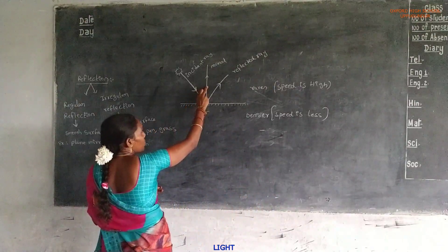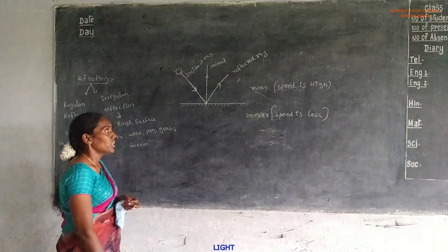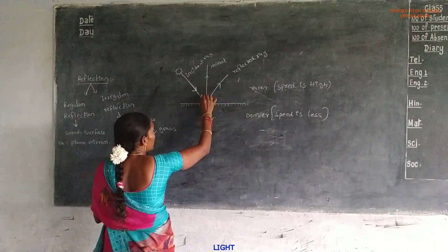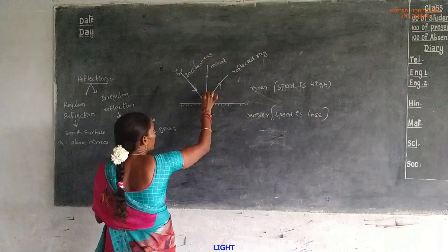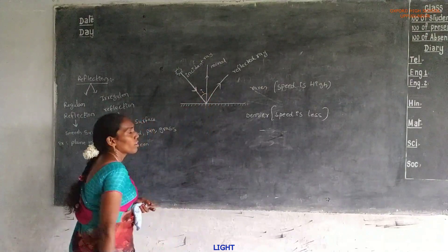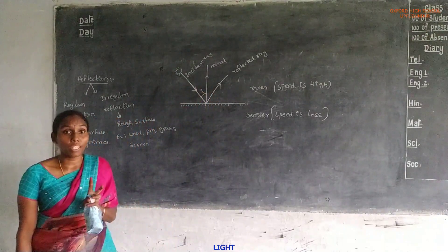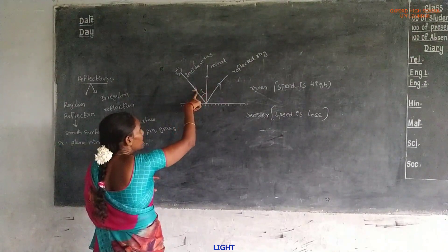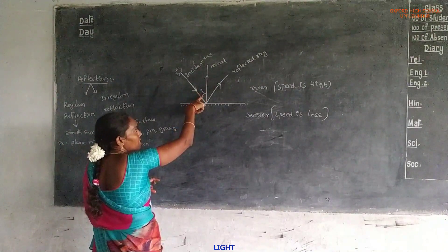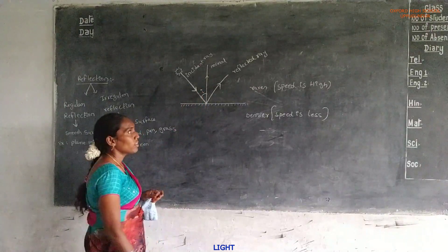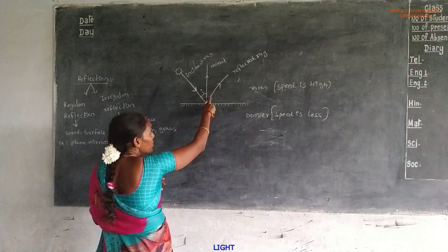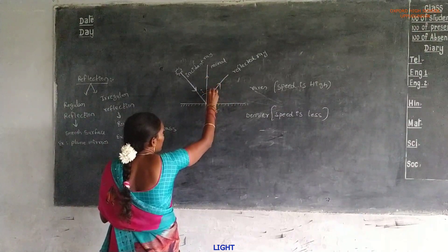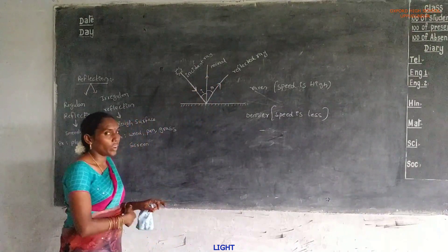Here we have the incident ray, normal, and reflected ray. The angle between the incident ray and the normal is called the angle of incidence, represented by the letter small i. The angle between the normal and the reflected ray is called the angle of reflection, represented by r.